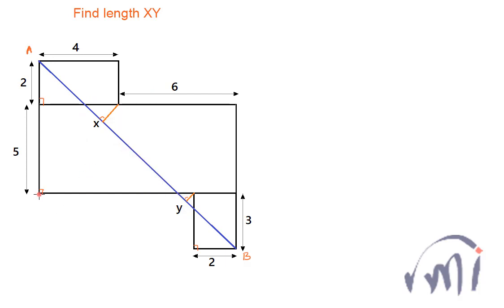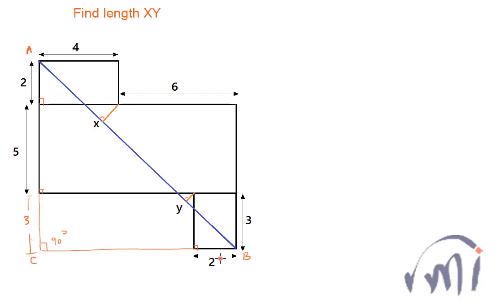If I extend this line and join it such that this angle is 90 degrees, let me call this point C. Then ABC is a right angle triangle, and the length of AB can be found using the Pythagorean theorem. This length from here is 3, so this total length is 4 plus 6, that is 10. So length AC is equal to 10, and length CB is also equal to 10.